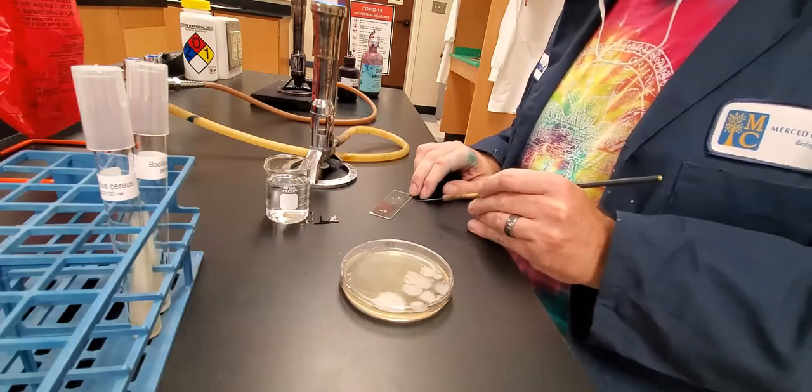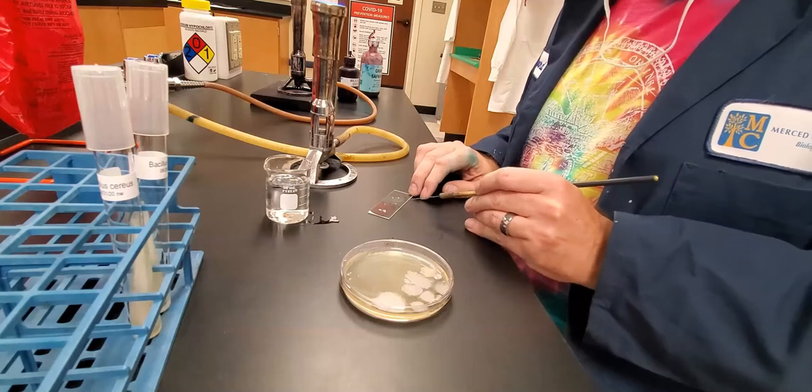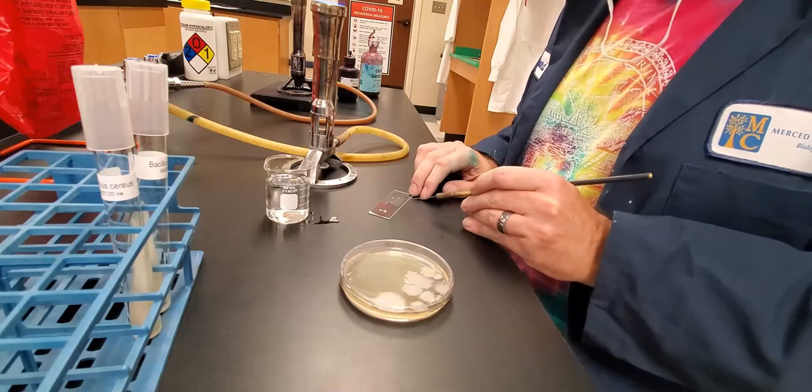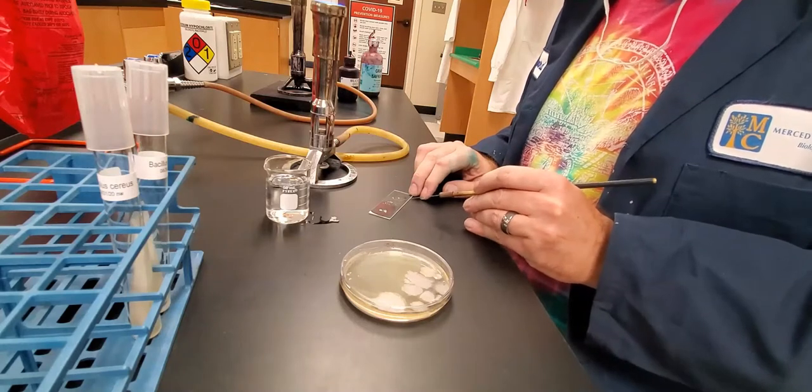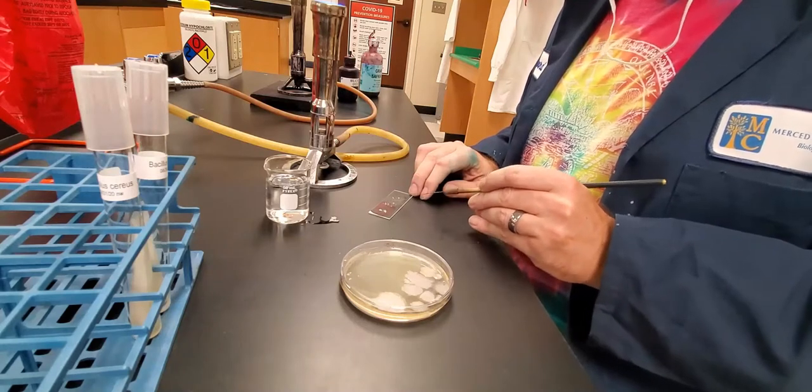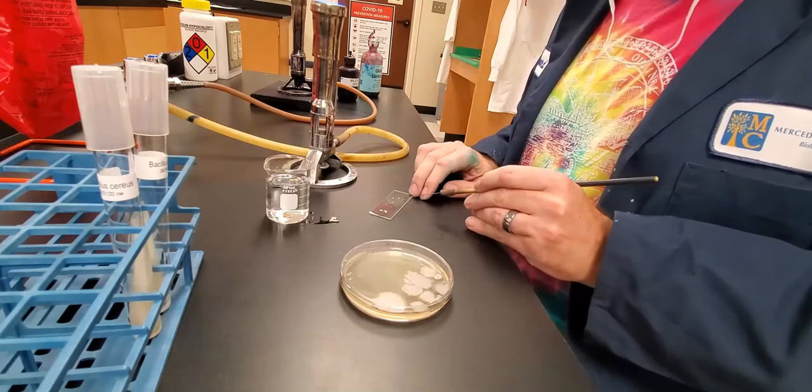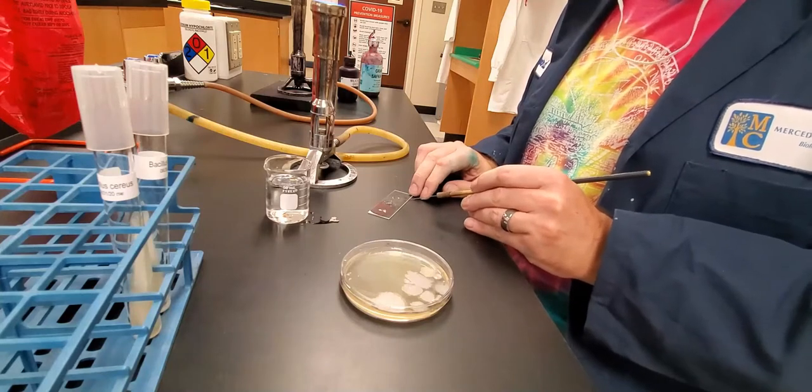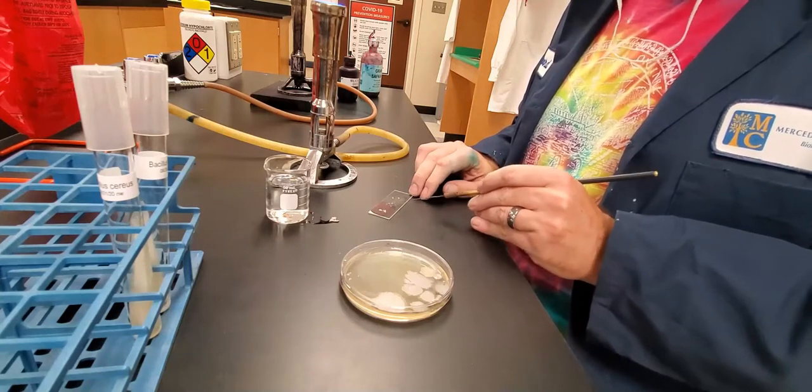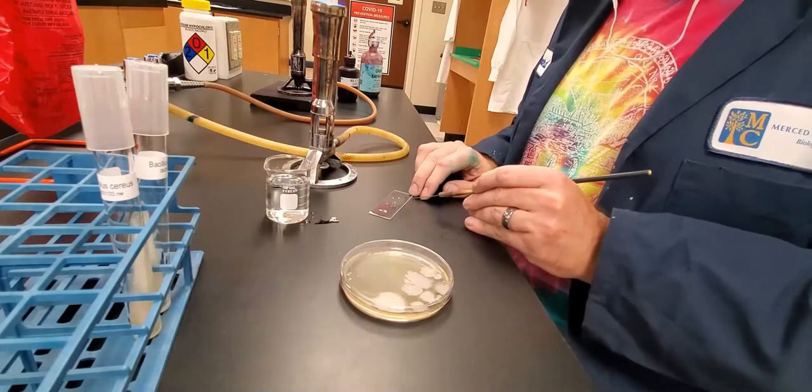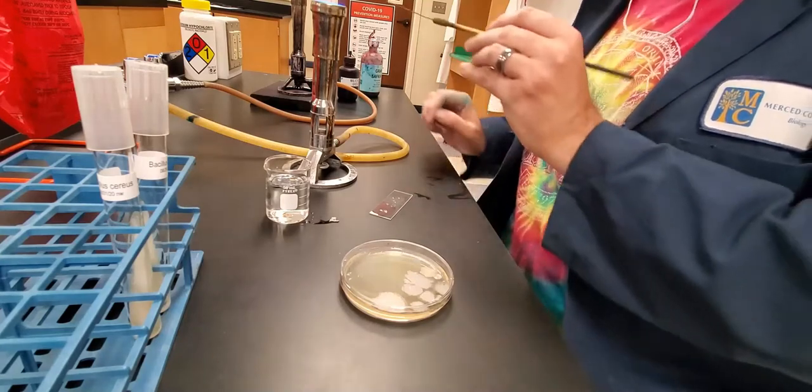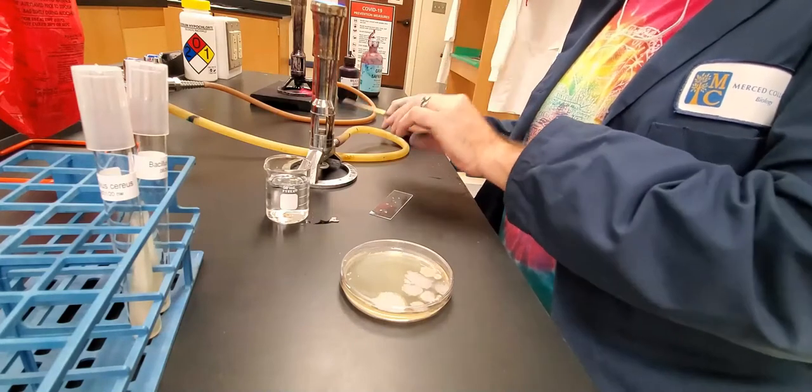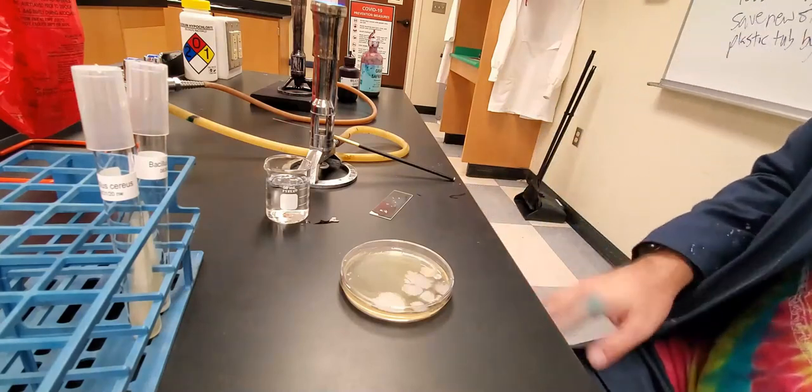The one thing I will mention here is just because you are using a bacteria for an endospore stain does not mean they make endospores. Endospores are something that are made when the cells are in an adverse environment where they can go dormant and protect their DNA. We don't always get spores. We have a few types of bacteria that we use that are more reliable at making the spores.